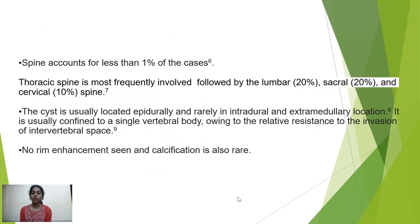Spine accounts for less than 1% of cases. The thoracic spine is most frequently involved, followed by lumbar 20%, sacral 20%, and cervical 10%. The cyst is usually located epidurally and rarely in intradural extramedullary locations. It is usually confined to a single vertebral body due to relative resistance to invasion of the intervertebral space. No enhancement is seen and calcification is also rare.